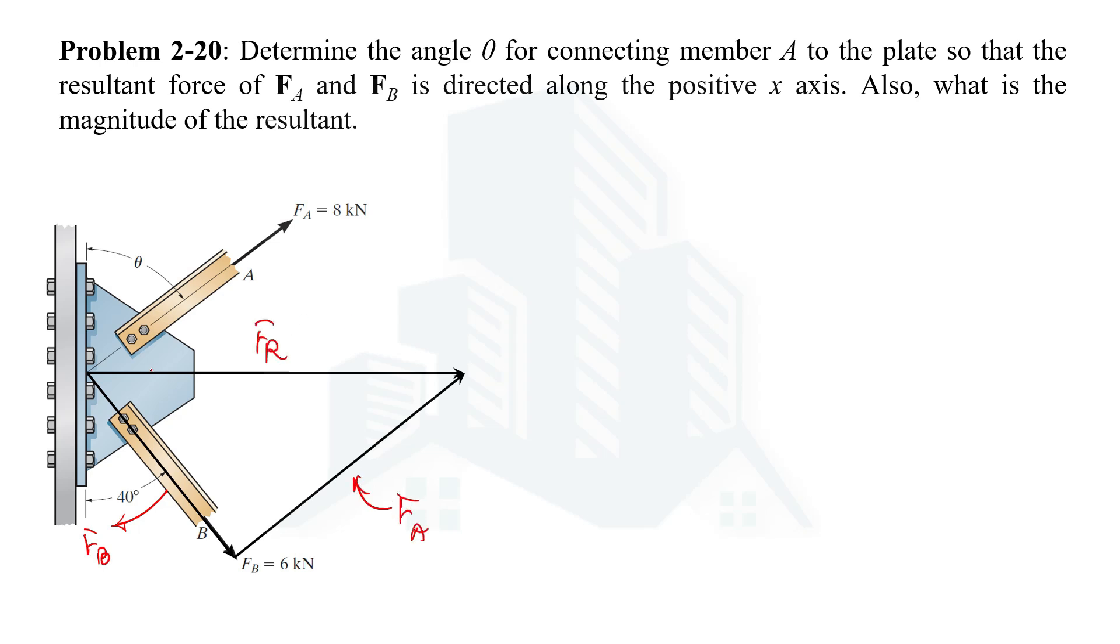We are known with this interior angle. If this is 40, then this angle would be 90 minus 40, which means 50 degrees, since the total is 90. We cannot determine this angle because we don't know the direction of FA force. Similarly, we cannot determine this angle because we don't know the direction of FA force.